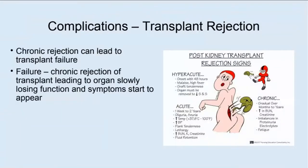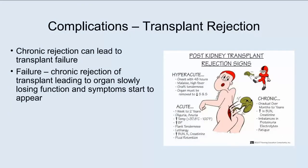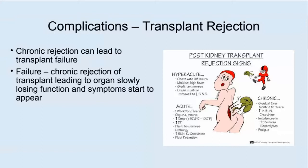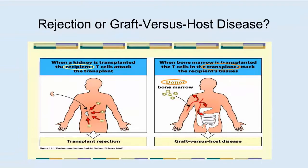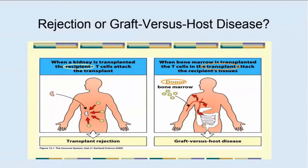Another complication is rejection. Over time, rejection may lead to failure, meaning complete loss of function. In rejection, the patient's cells attack the transplant. In graft-versus-host disease, the cells of the transplanted organ attack the patient's cells — similar but different in terms of which tissue is doing the attacking.